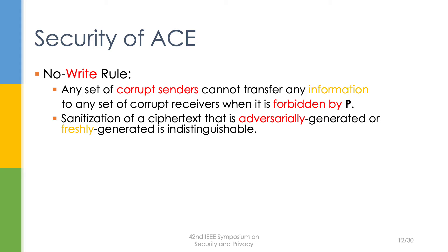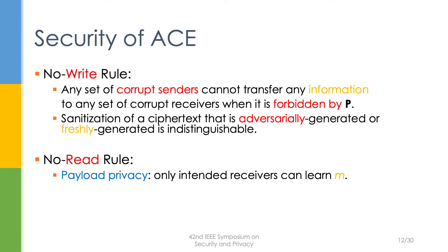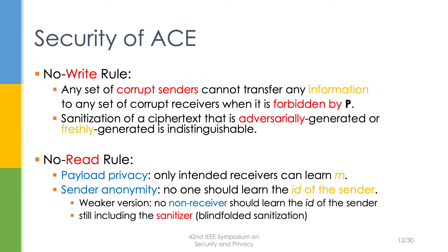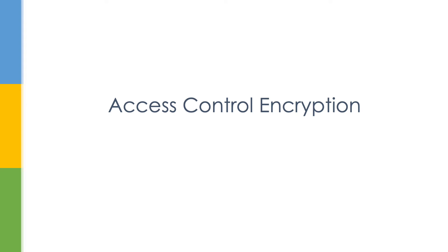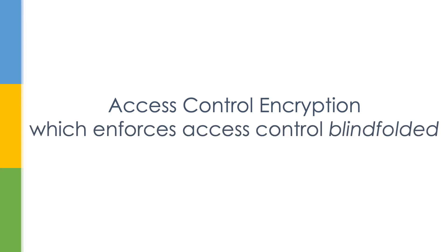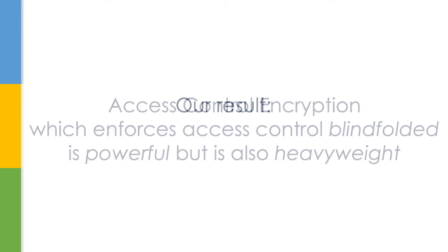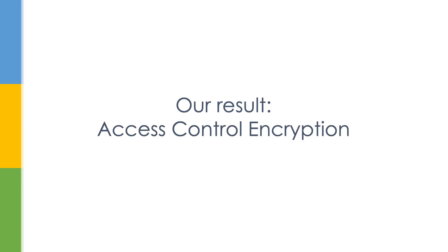Security of ACE: ACE should ensure the low-rights rule, such that any set of corrupt senders cannot transfer any information to any set of corrupt receivers when the communication is forbidden by the policy P. This is captured by indistinguishability between the sender testing two kinds of ciphertext. ACE should also ensure the low-read rule — the payload should remain private, and no one should learn who the sender was. A weaker version of sender anonymity only considers protection against honest receivers. In a nutshell, ACE can enforce access control blindfolded, which is very powerful, but existing constructions are also very heavyweight.